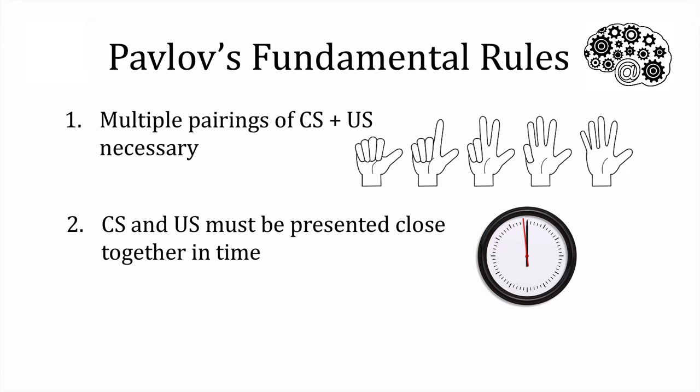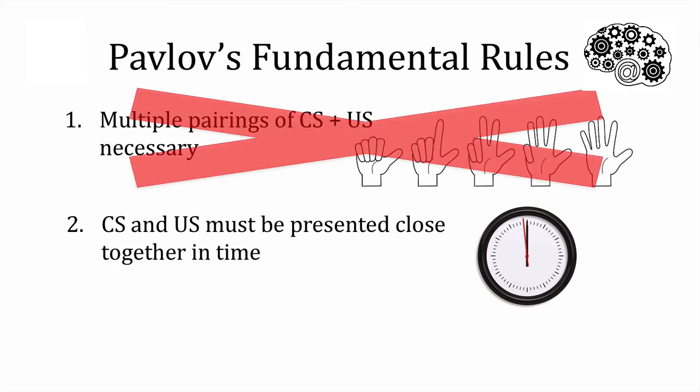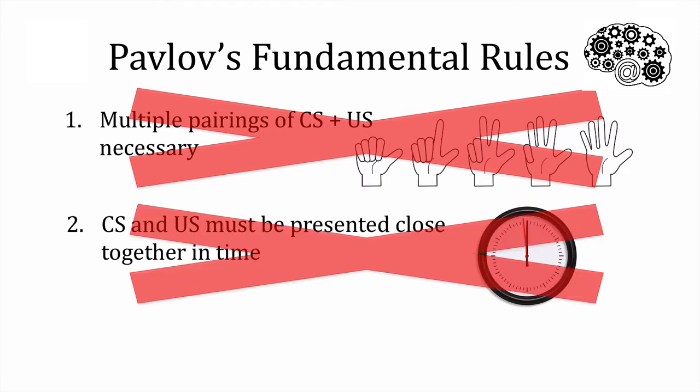However, Sherry's conditioned taste aversion did not appear to require multiple pairings. In fact, there was only one time when the pizza was paired with illness. Also, Sherry ate the pizza hours before the nausea set in, so conditioned taste aversion appears not to fit neatly with the research on classical Pavlovian conditioning. Of course, Sherry's learning happened in messy real life, so it's useful to look at this phenomenon in a laboratory setting.